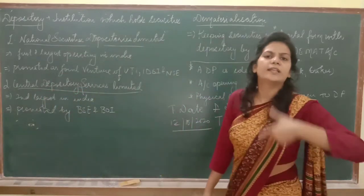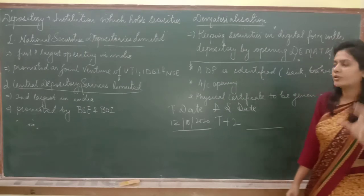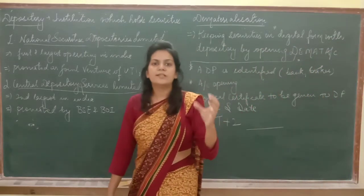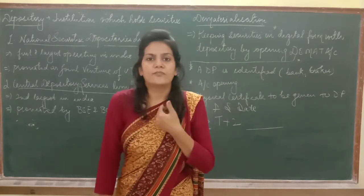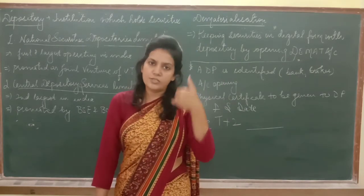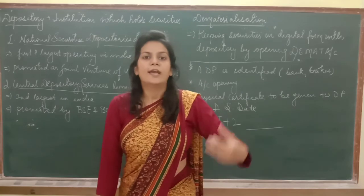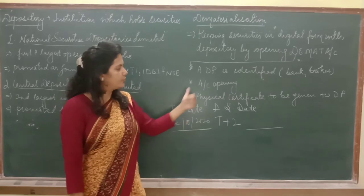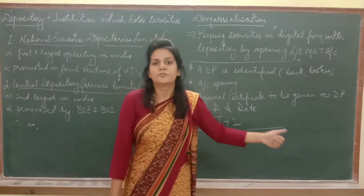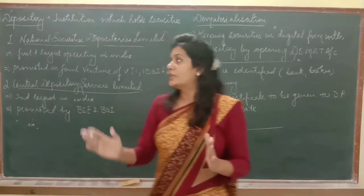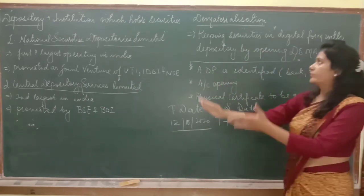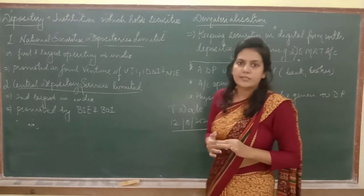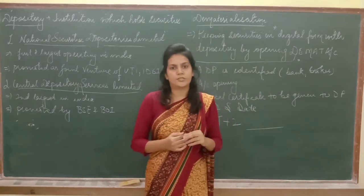We will discuss T+2 in detail in the next video lecture. The key idea is: transaction date is when the transaction took place, and settlement date is when we receive the money. If I sell shares today, today is the transaction date, and if T+2 means I receive money on Thursday, that becomes the settlement date. After understanding depository and dematerialization, we will next start the procedure of trading on a stock exchange.